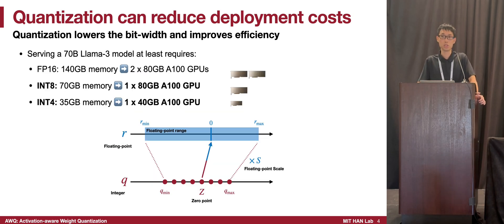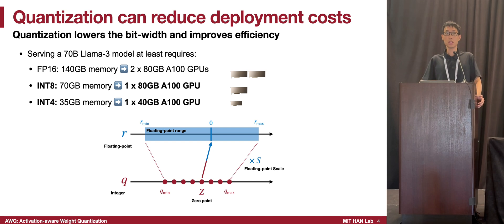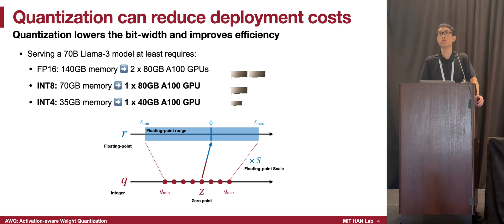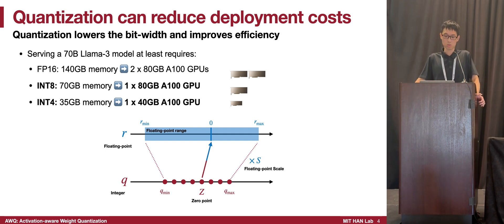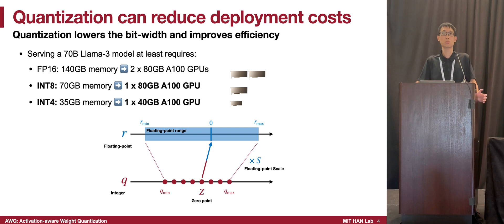Quantization can help reduce deployment costs. If you want to serve a LLaMA 3 70 billion parameter model, it requires 140 gigabytes of memory in FP16. However, if you quantize the model to INT8 or INT4 in terms of the weights, you can significantly reduce the deployment cost from two A100 GPUs with 80 gigabytes all the way down to one A100 GPU with 40 gigabytes, which is also much cheaper.